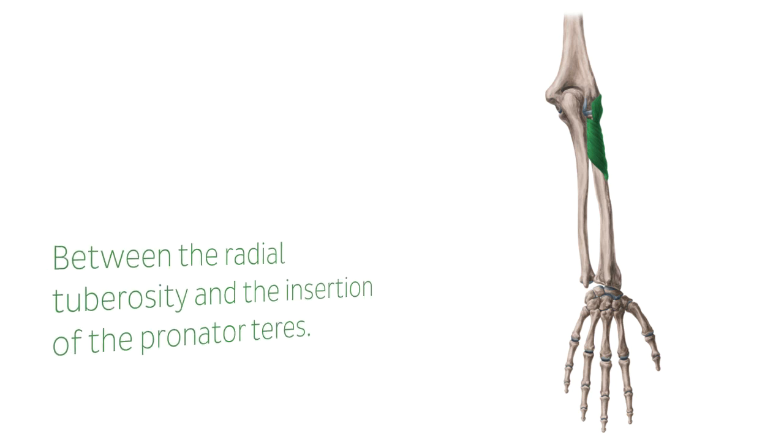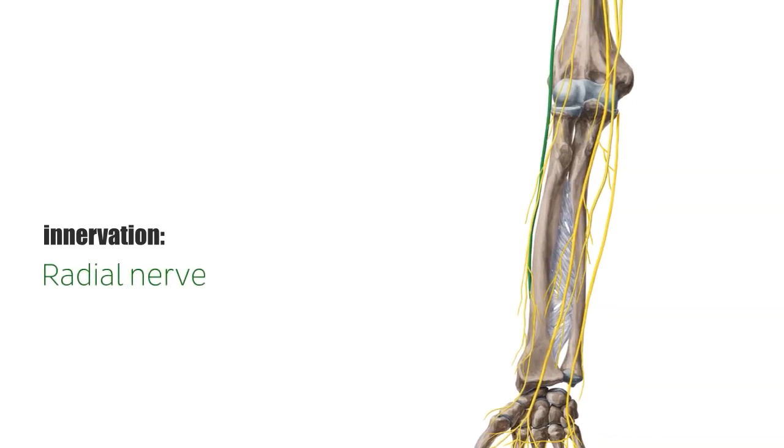Like all extensors of the forearm, these five muscles are innervated by the radial nerve. The radial nerve divides into a superficial branch and deep branch at the height of the radial head.